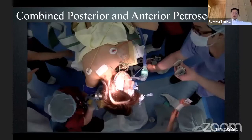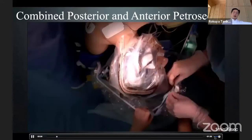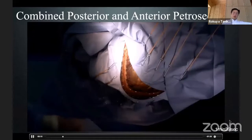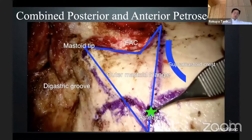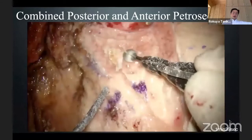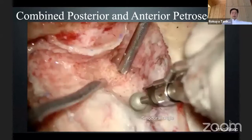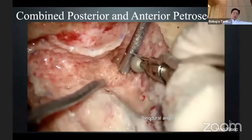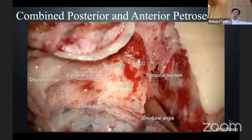This is another example of a skull base approach — the left-side combined petrosal anterior and posterior petrosectomy. First, I do a mastoidectomy for posterior petrosectomy. Now the mastoid bone is being drilled. Here is the sinodural angle. The temporal petrosectomy is skeletonized, the sigmoid sinus and the presigmoid sinodural angle are skeletonized.